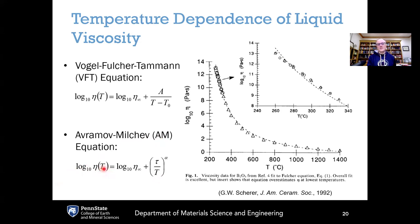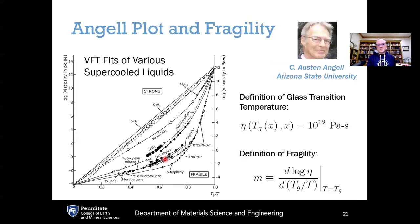The AM equation solved the problem of dynamic divergence, gave an equation with more physical meaning compared to VFT which was just proposed empirically, and provided better fits of the viscosity-temperature relationship. Now, the concept of strong and fragile liquids goes back to Professor C. Austin Angell at Arizona State University. He took viscosity versus temperature data for a wide variety of liquids — oxide liquids like silica and germania, chalcogenide liquids like arsenic sulfide, ionic liquids like zinc chloride, and organic liquids like toluene, chlorobenzene, and ortho-terphenyl — and put it all onto one master plot with log10(viscosity) on the y-axis and normalized inverse temperature Tg/T on the x-axis.